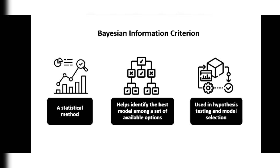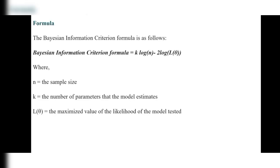BIC is a statistical method that helps identify the best model among a set of available options. As an analogy, in a class of 20 students, we select the best student who studies well based on comparatively highest grades — similarly, BIC selects the best model. It is used in hypothesis testing and model selection — this is the main clear picture of BIC, the Bayesian Information Criterion.